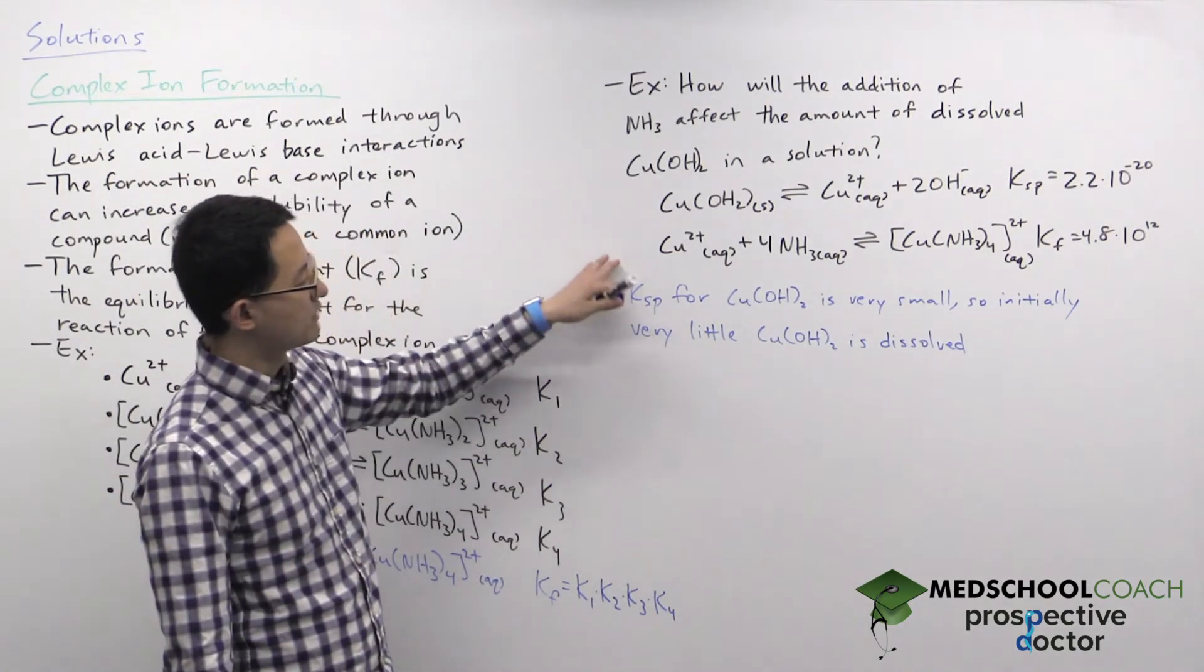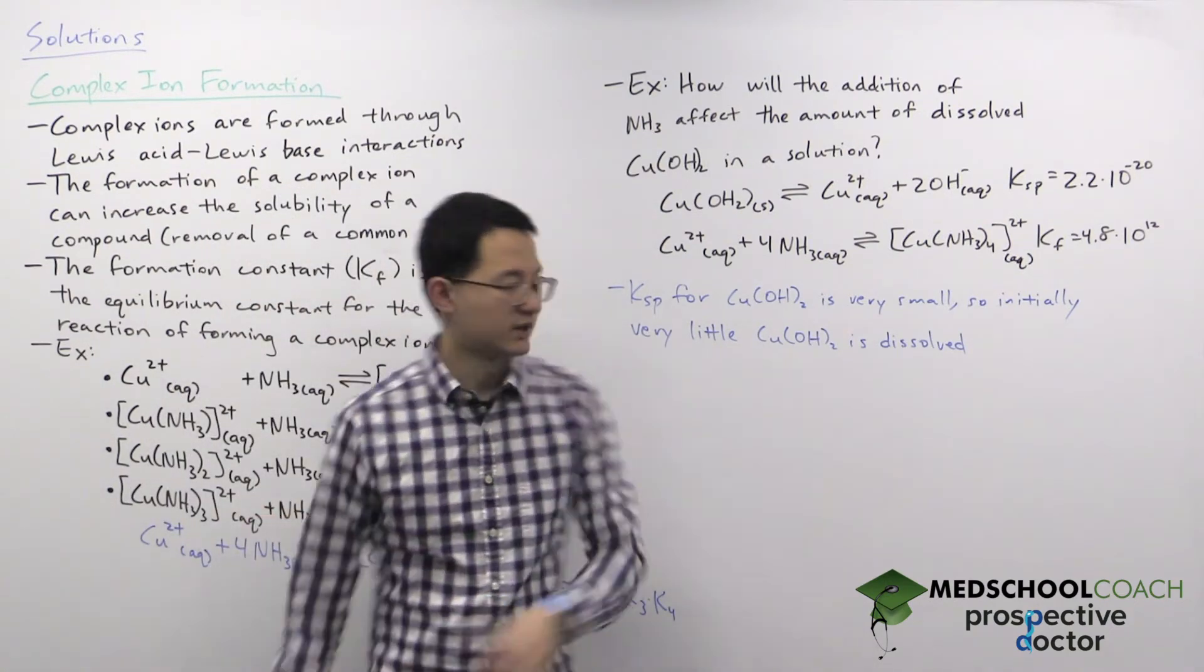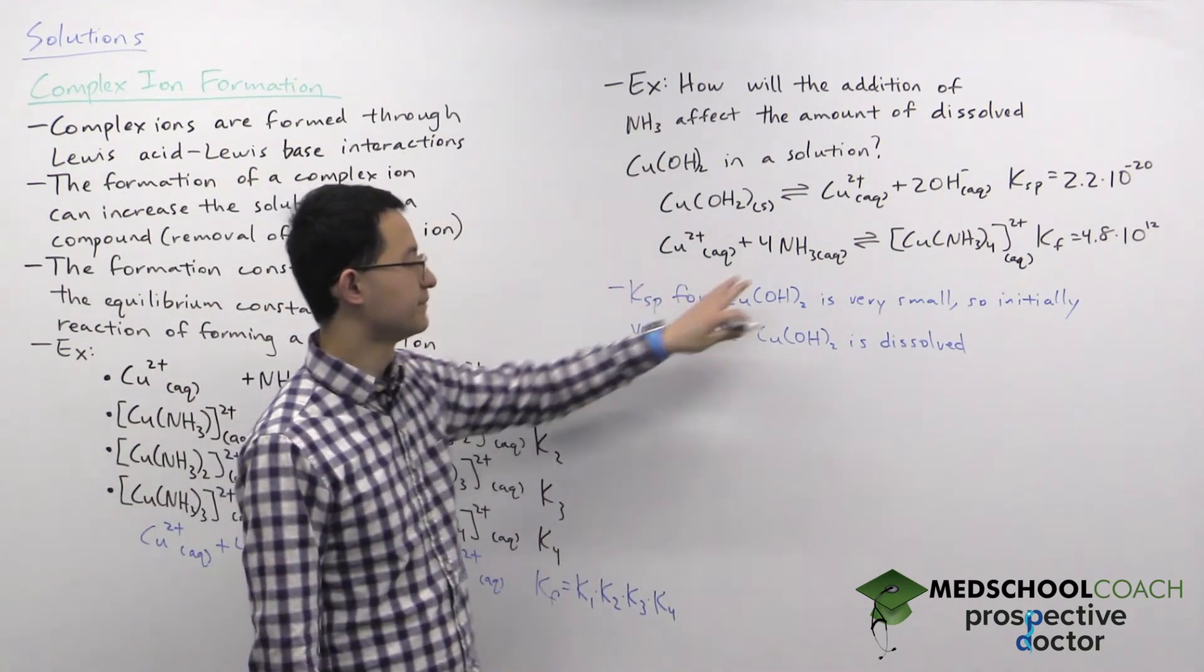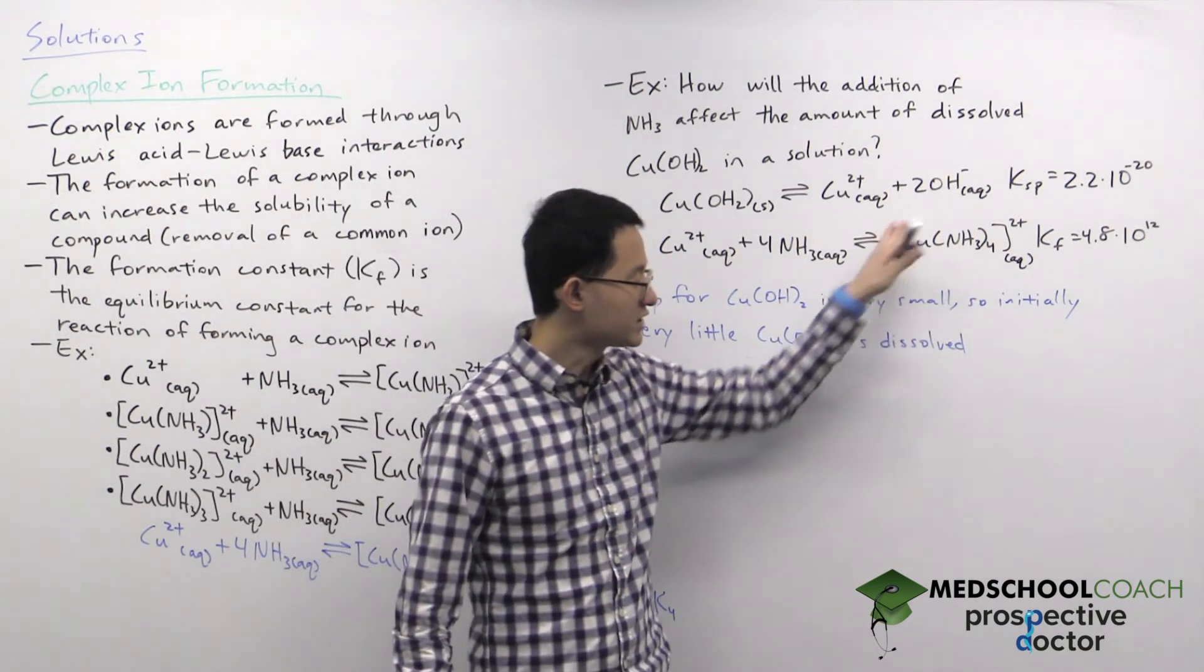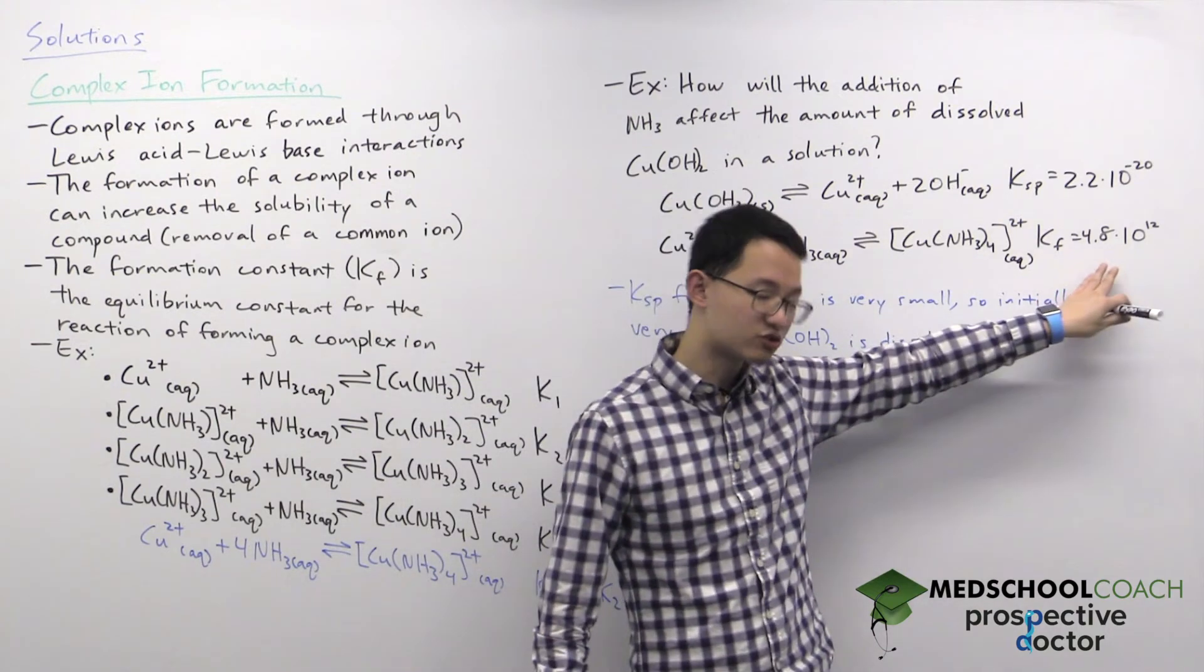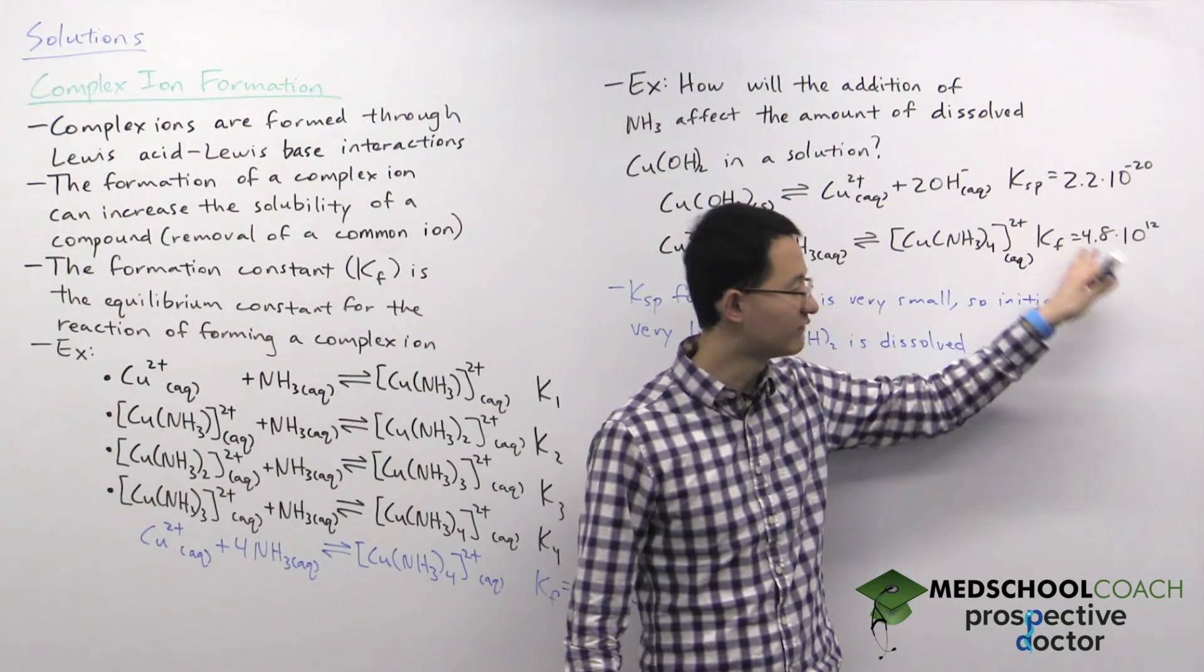So that means initially most of the copper hydroxide is a precipitate in solid form. So now what happens when we add ammonia? Well ammonia can combine with copper cations to form a complex ion. The formation of this complex ion has an extremely large formation constant, 10 to the 12, which is very favorable.